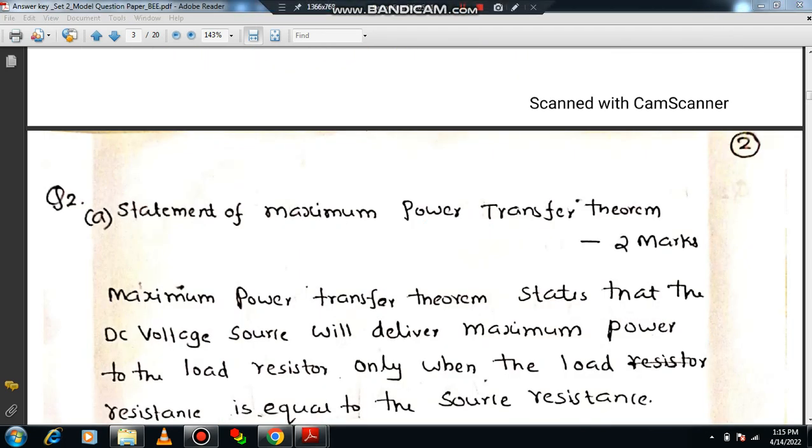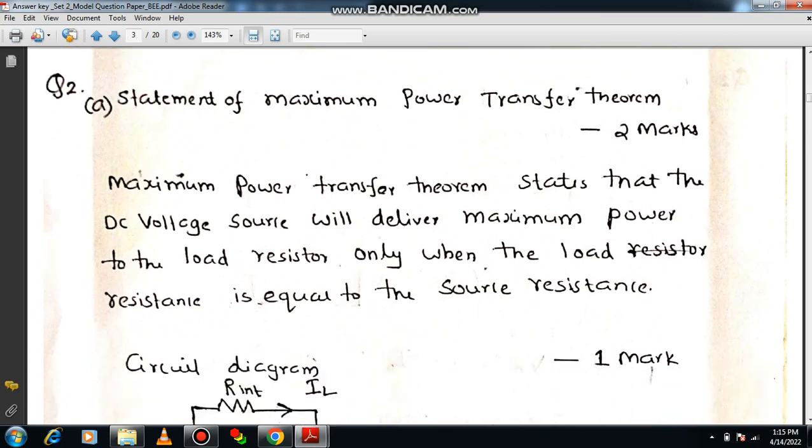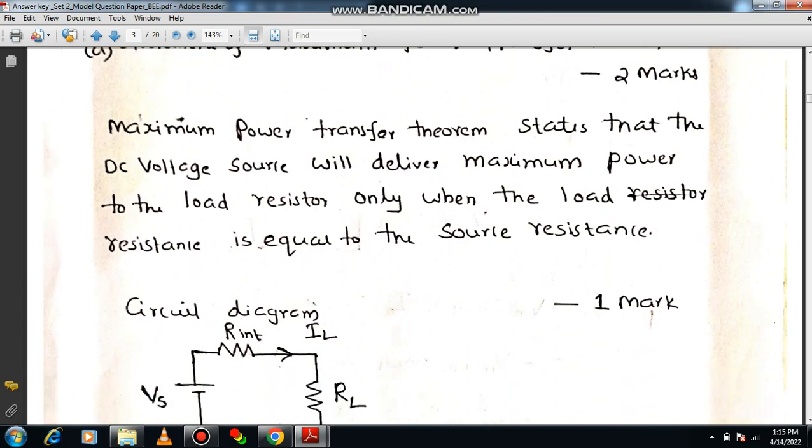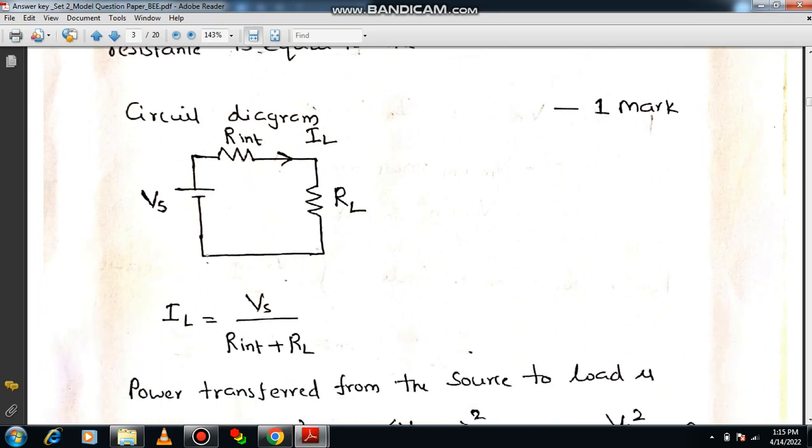We have to derive the expression for maximum power transfer theorem. First it is better to write the statement of maximum power transfer theorem. If you write you will be getting 2 marks. The maximum power transfer theorem states that the DC voltage source will deliver maximum power to the load resistor only when the load resistance is equal to source resistance. You will be getting 2 marks. Then draw the circuit diagram. Mention the load resistor RL and the source resistance Rint and Vs. In the load resistance we can say it's fixed actually. Only the source resistance will be varied. Load resistance you can make it as fixed one.